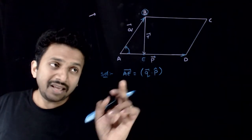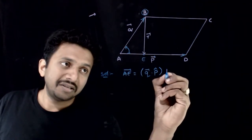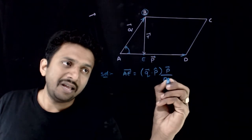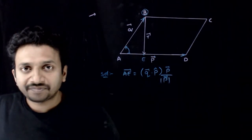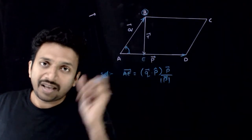Now what is the vector AE? Length of AE times unit vector in this direction is P bar by mod P bar. So this is the vector AE bar.